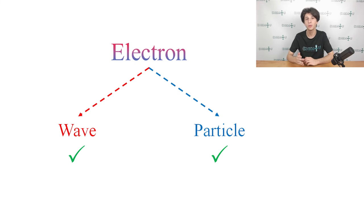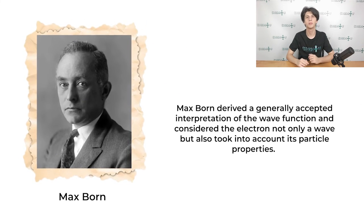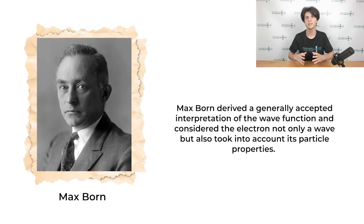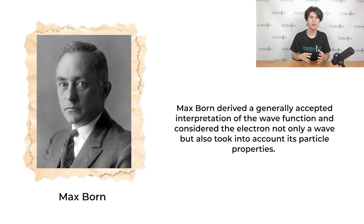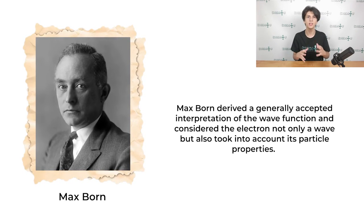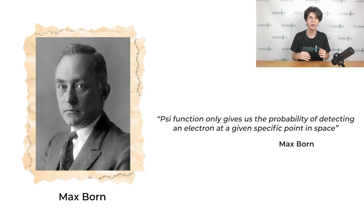This is because an electron is not a wave in its pure sense. In reality, it has been experimentally proven that electrons also exhibit particle properties. Therefore, it is both a wave and a particle at the same time. Eventually, Max Born derived the generally accepted interpretation of the wave function. He considered the electron not only a wave, but also took into account its particle properties. Thus, Max Born stated that the ψ function squared only gives us the probability of detecting an electron at a given point in space.